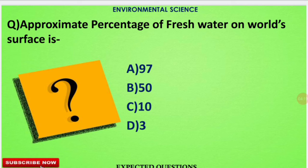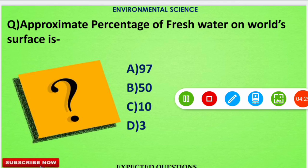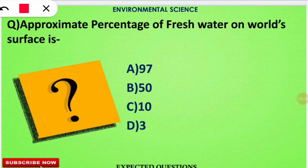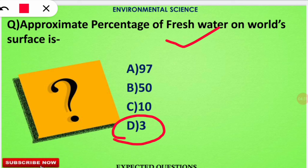The next question is: approximately what percentage of fresh water exists on the world's surface? The correct option will be option number D — approximately 3% of the world's surface water is fresh water.